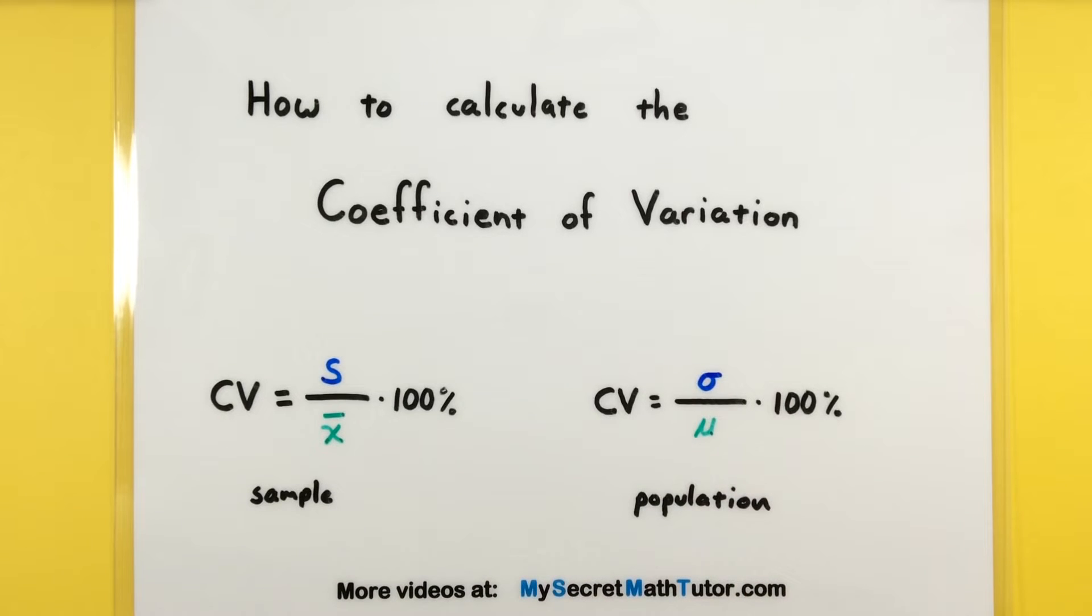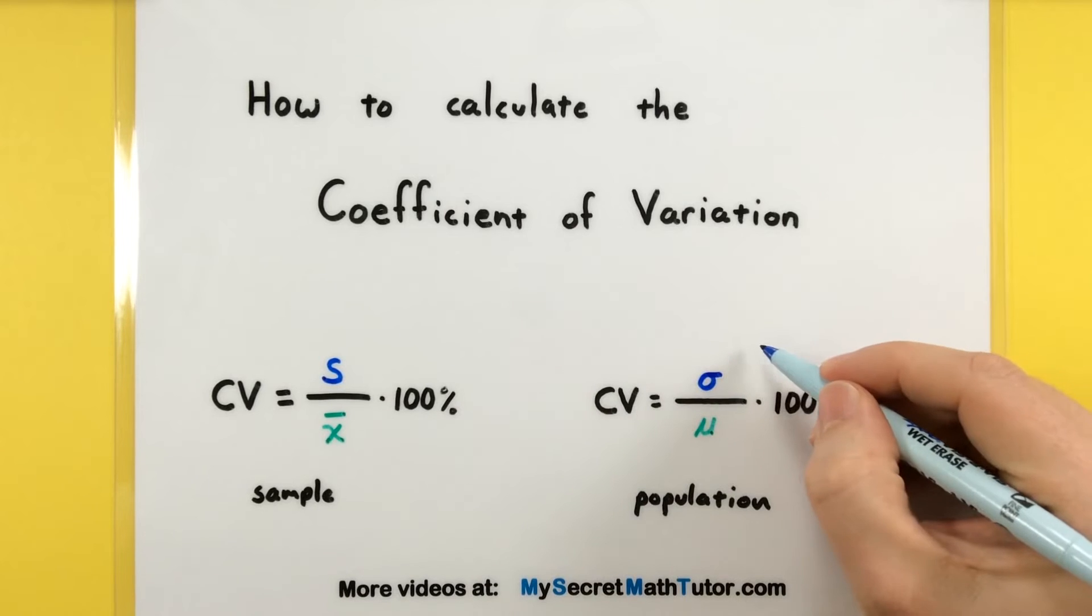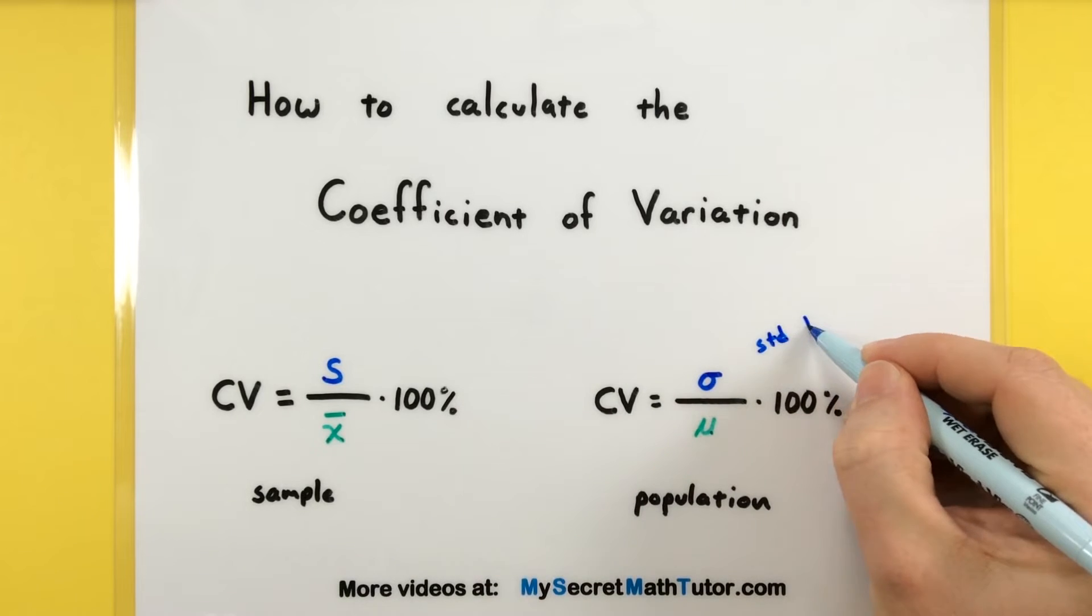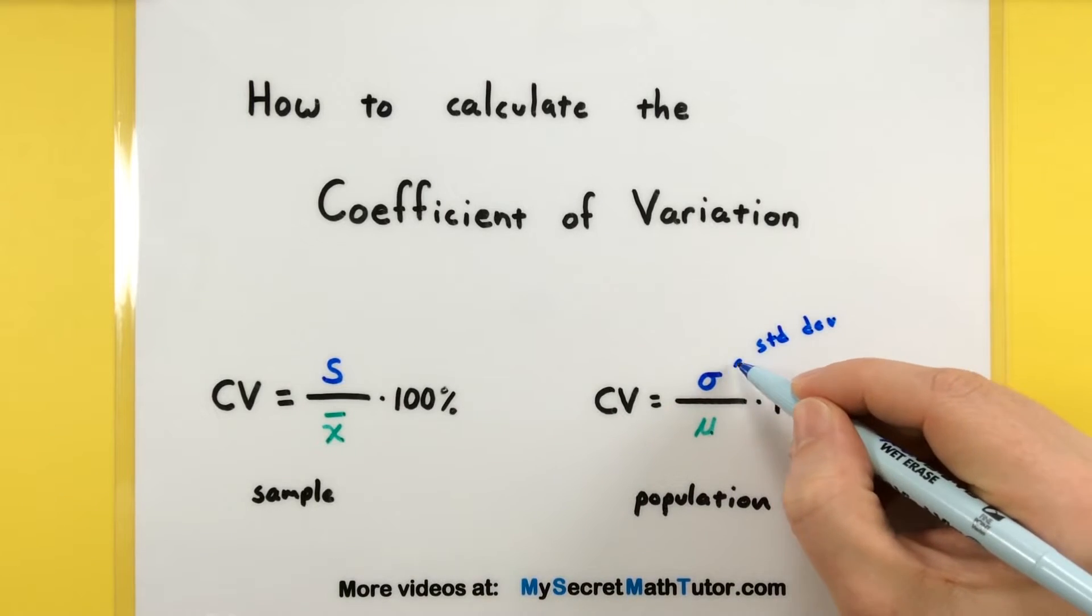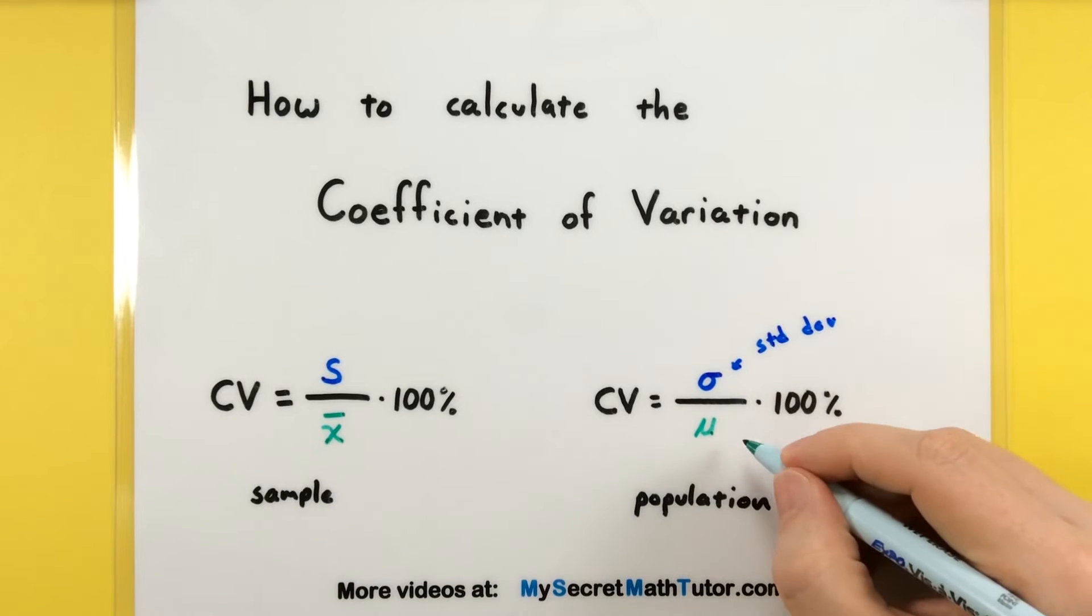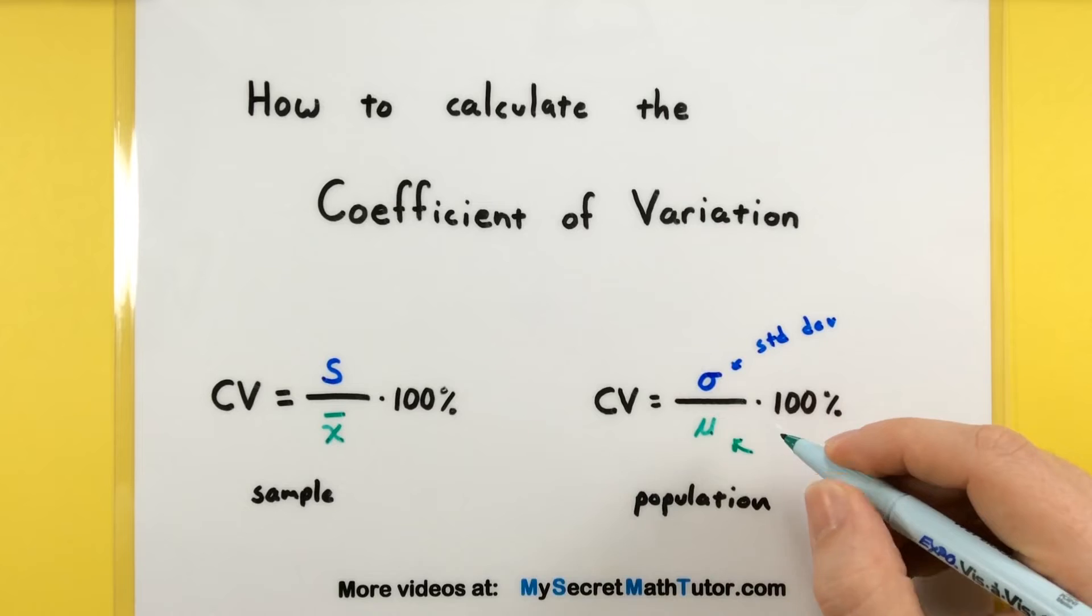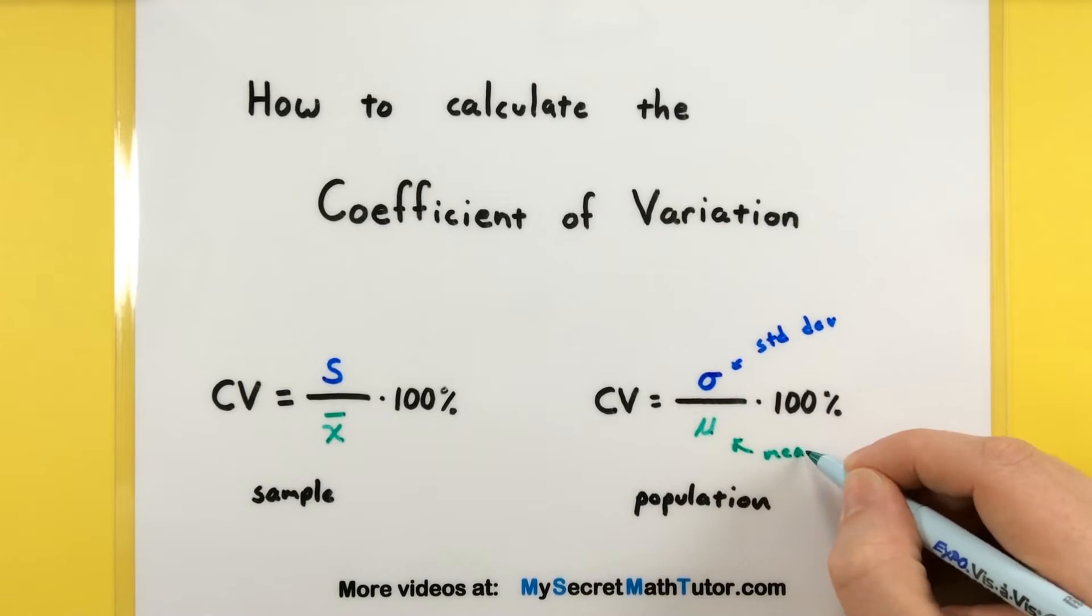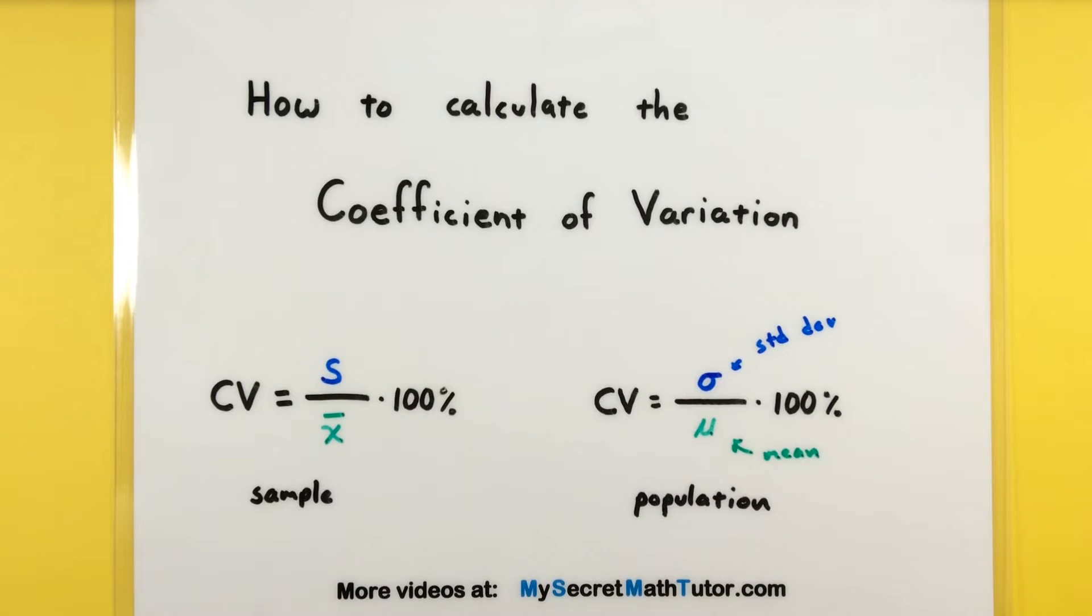What you're going to do is take the standard deviation, that'd be this top number, and you'll end up dividing it by the mean. So even though the notation is different, this is really just to signify whether we are dealing with a sample or a population.